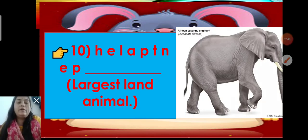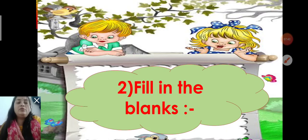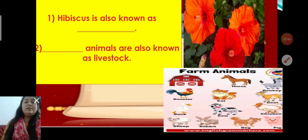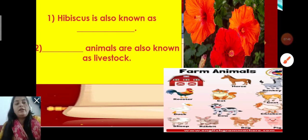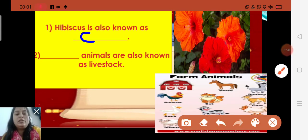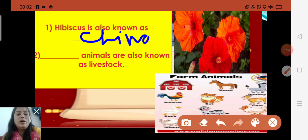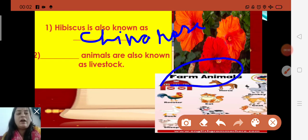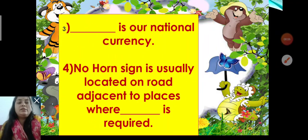Now, after children, one more work. That is the fill in the blank. So, that will also you will complete. Like there, hibiscus is also known as, you will write here, china rose. C-H-I-N-A, China, R-O-S-E, rose. Farm animals are also known as livestock. Farm animals are also known as livestock. Now, next, children, rupee is our national currency.